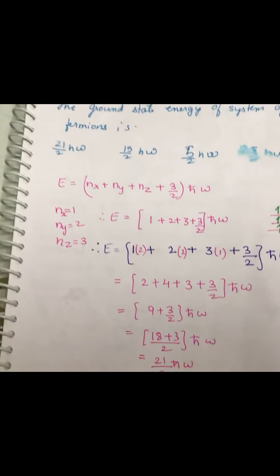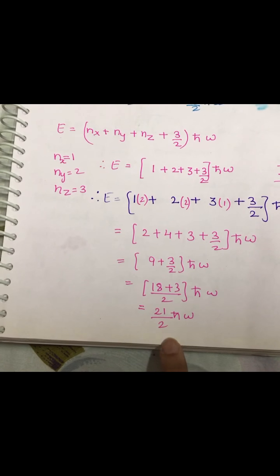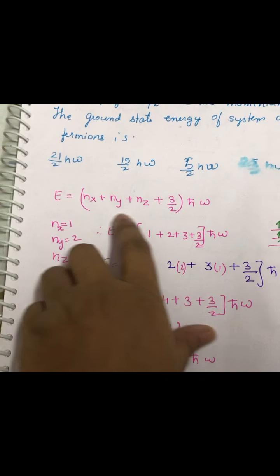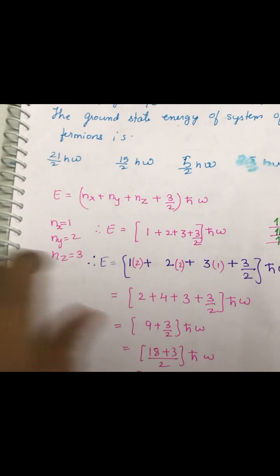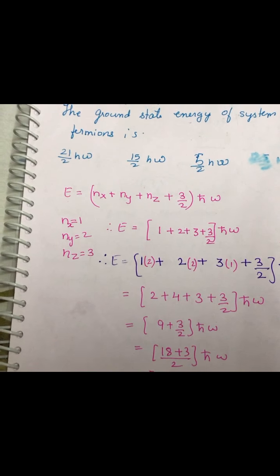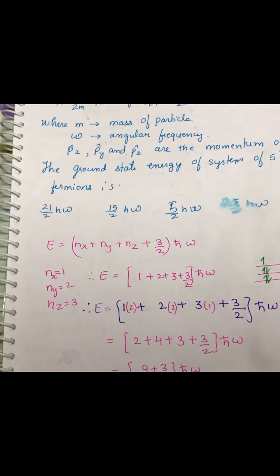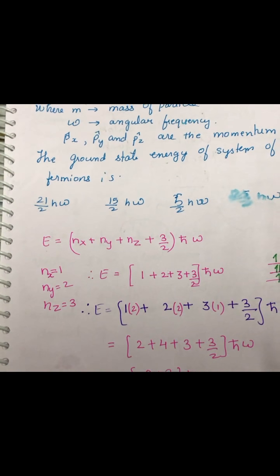When you work out with this, you will find it is 21 by 2 h-bar omega. So the option here is first. So it was the direct formula to calculate the ground state energy of the system of five non-interacting fermions.